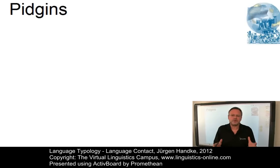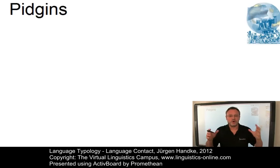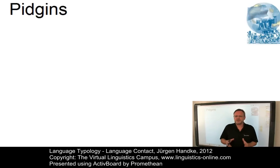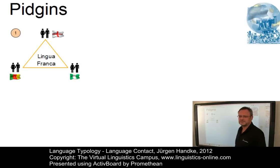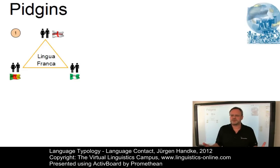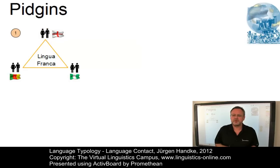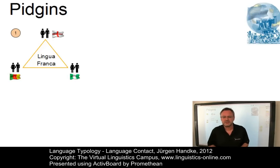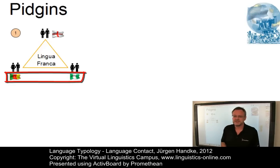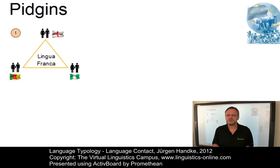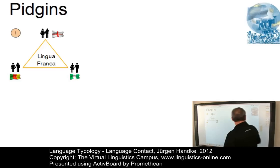Among the most interesting cases of language contact are those which came about as a result of trade or colonial expansion. This led to varying kinds of linguistic compromise for the purpose of exchanging goods. The simplest form of such a contact language is the lingua franca — a special purpose language. When European tradesmen extended their market to other countries, a simplified form of their mother tongue was used as a business language between tradesmen with different tribal and linguistic backgrounds. When the Europeans left, the native citizens continued to use this lingua franca, now referred to as pidgin.